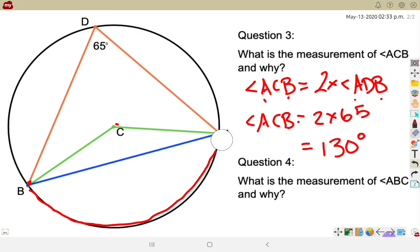Question number 4 says, what is the measurement from angle A, B, C and why? What is the measurement of angle A, B, C and why? So from A to B to C. So I'm looking for this small angle here between the green and blue lines. Well, I found that this angle here, the central angle, was 130 degrees.